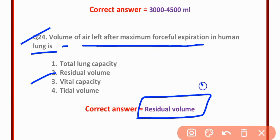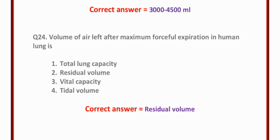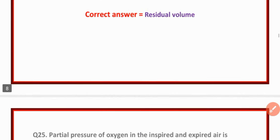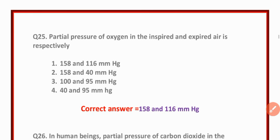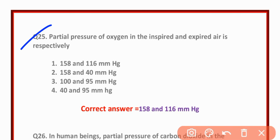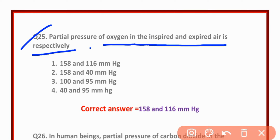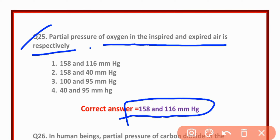MCQ number twenty-five: Partial pressure of oxygen in inspired and expired air is respectively 158 and 116 mmHg — correct.